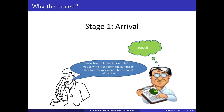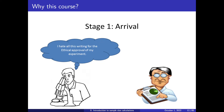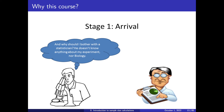Here is a typical situation when researchers have to fill forms for ethical committees. A researcher arrives and says: 'I have been told I have to talk to you to write the number of mice for my experiment. I have enough with 3,000.' 3,000 sounds like a lot, but let's see if there is some reason for it. What the researcher is typically thinking is that he hates all this writing for ethical approval and just cares about performing the experiment and seeing what comes out.